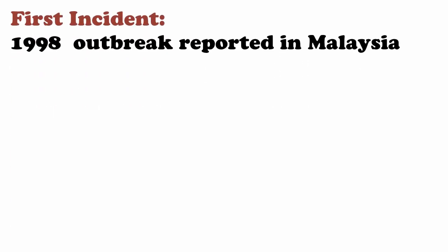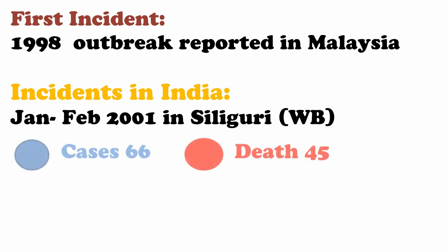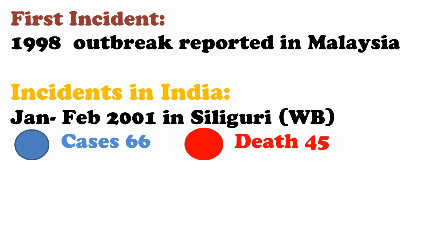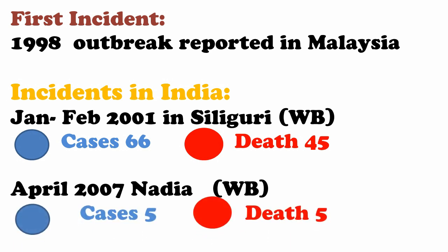The first incident of this virus was reported in 1998 in Malaysia. In India it was earlier reported from West Bengal — January to February 2001 in the Siliguri district, where it claimed 45 lives out of 66 cases. Again in April 2007 in West Bengal, there were 5 deaths out of 5 cases — a 100 percent fatality rate. From that you can assume how fatal this virus is.